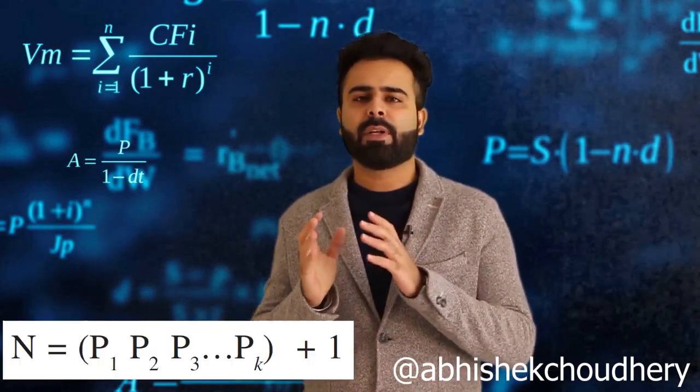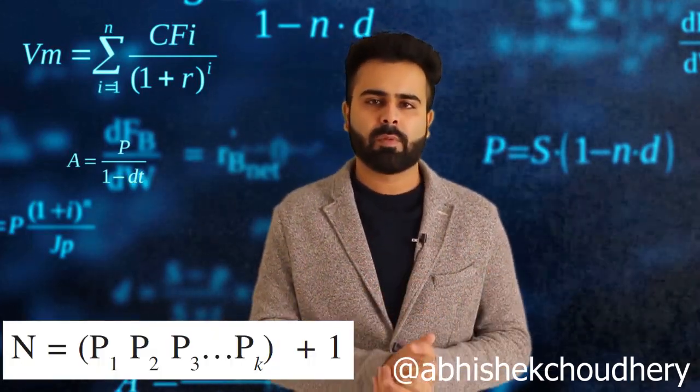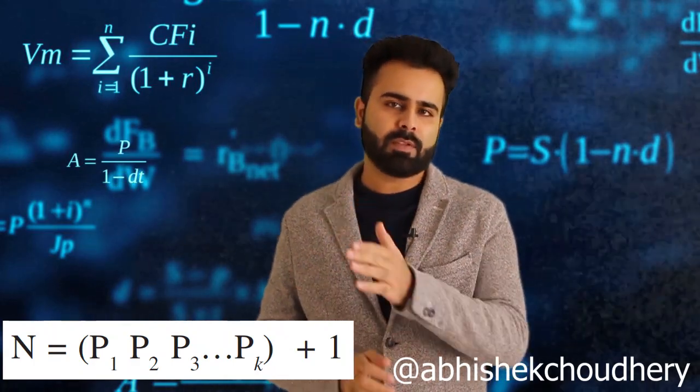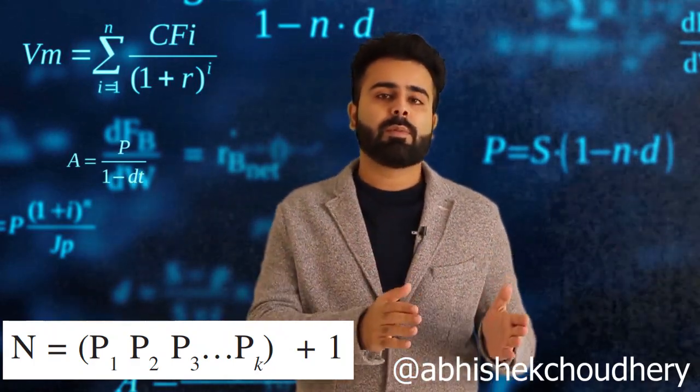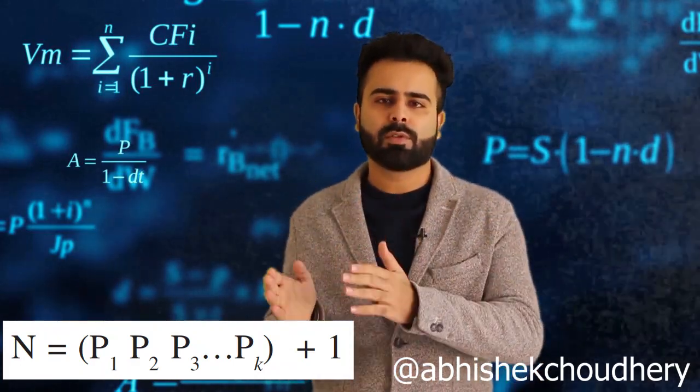Now let's assume another number N which is the product of all these prime numbers: N = P1 × P2 × P3 × ... × Pk + 1. Since this number is a product of all these numbers plus 1, it will obviously be larger than all those numbers.